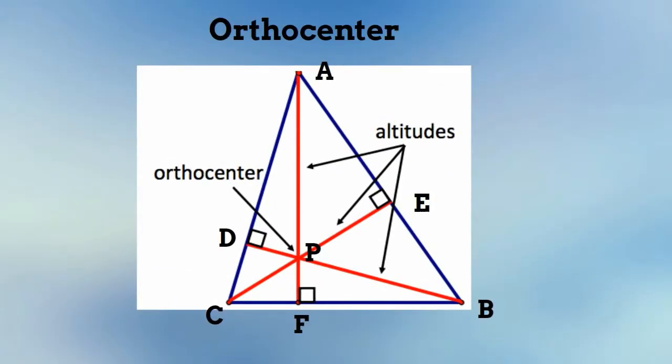The orthocenter is the point where the three altitudes of a triangle intersect. An altitude is a line that is perpendicular to the vertex that runs through the base. Notice that this triangle has three altitudes.